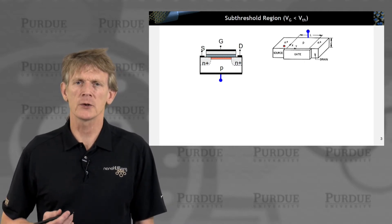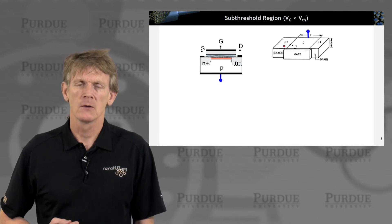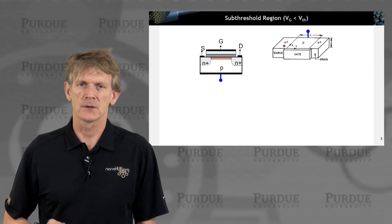and we're going to start looking first at the sub-threshold region. This is the region where we do not have minority carriers under the oxide yet, so we're just operating it in depletion.